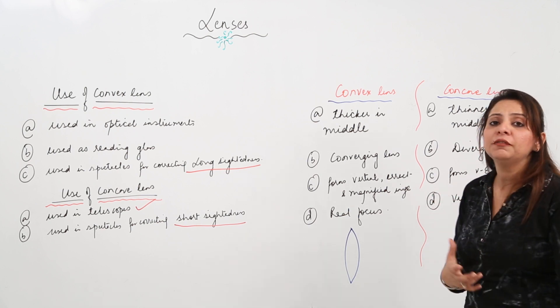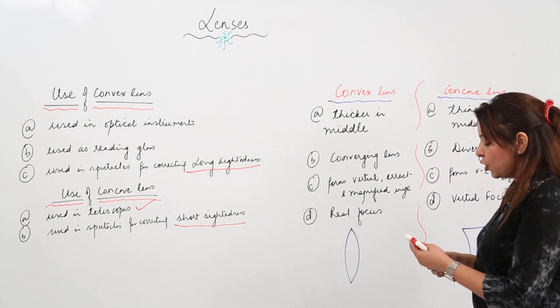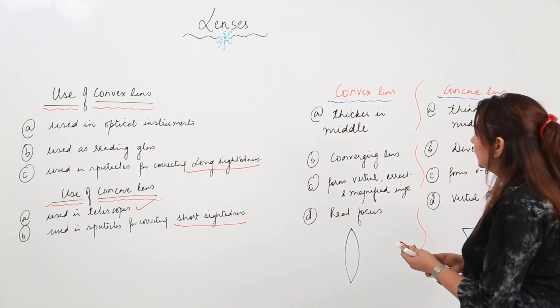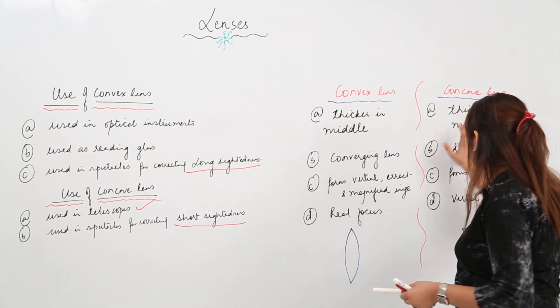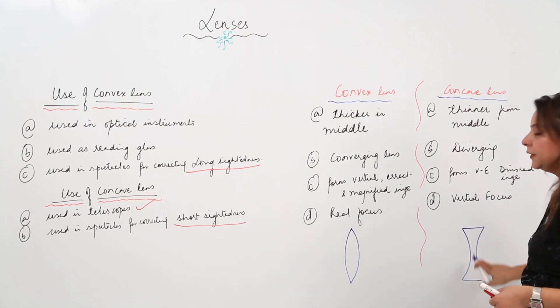If we talk of the difference between concave and convex lens: the convex lens is thicker from the middle as compared to the edges, but concave lens is thinner from the middle as compared to the edges - edges are comparatively thicker.